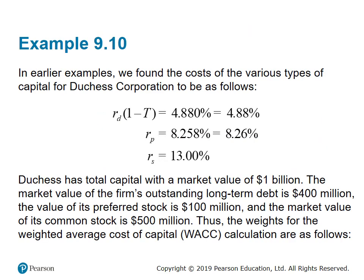The other three sources — preferred stock and common stock — do not reflect any tax shields.